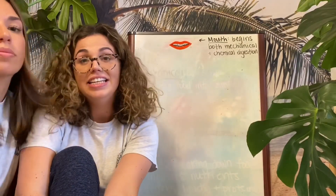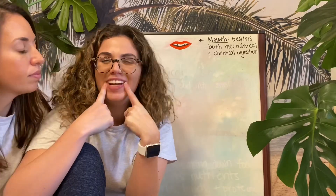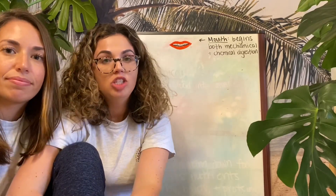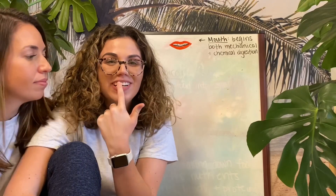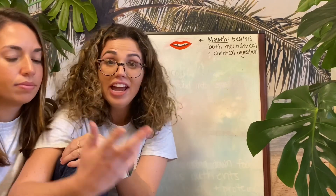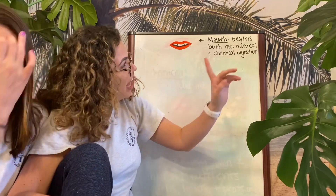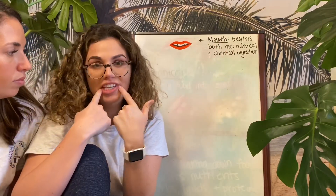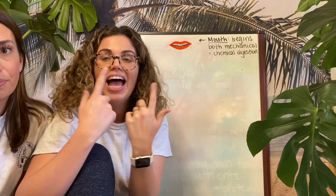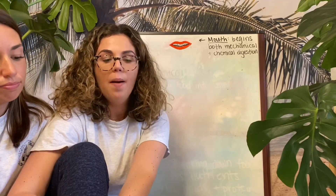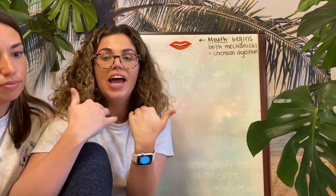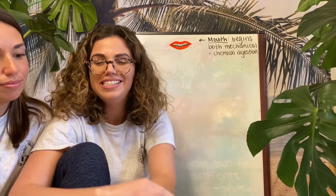Now we're going to get into the nitty-gritty and start talking about the organs of digestion. We begin at the mouth — your lips, teeth, tongue, and the place where you put food into your body. The mouth begins both mechanical digestion with your teeth and chemical digestion with amylase. This is where food enters and begins the process of digestion the second it enters your mouth.